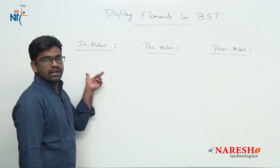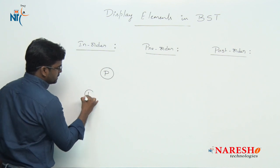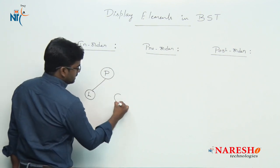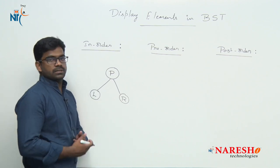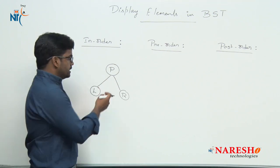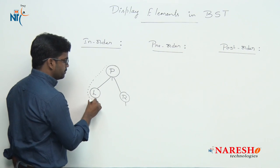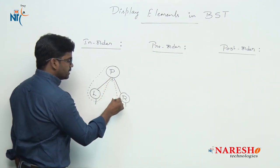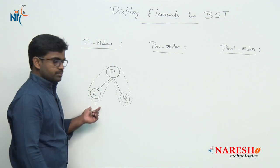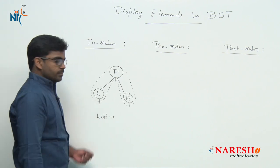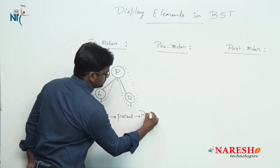For example, in in-order traversal — consider this is the parent, the left-hand side connected is the left child, and the right-hand side connected is the right child. In in-order traversal, the left child comes first, then the parent comes next, and then the right child.